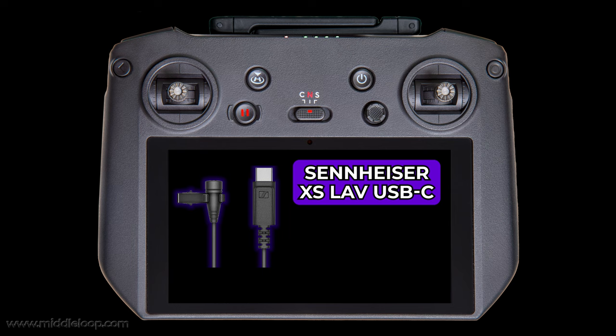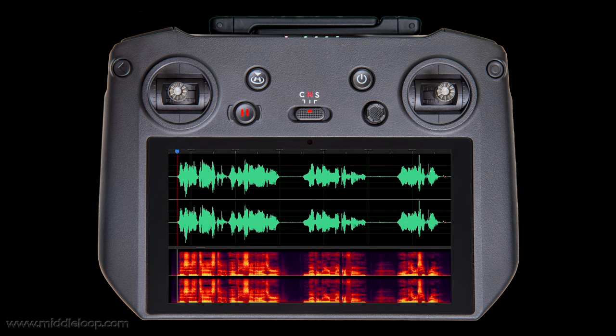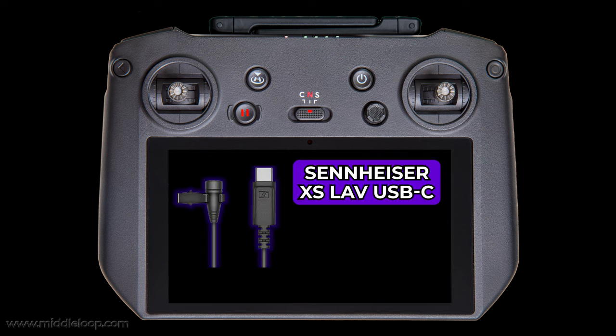Sennheiser is a good name in audio. At $60, this mic is not exactly top of the line, but let's take a listen. This is a test of the Sennheiser lavalier microphone on the RC Pro. The only downside is that it's wired, but it is a lavalier which clips onto your lapel. It comes with a USB-C connector which plugs into the bottom of the RC Pro so the wire hangs out of the way. The sound is pretty good, and at $60, it's the least expensive of all the mics we tested.